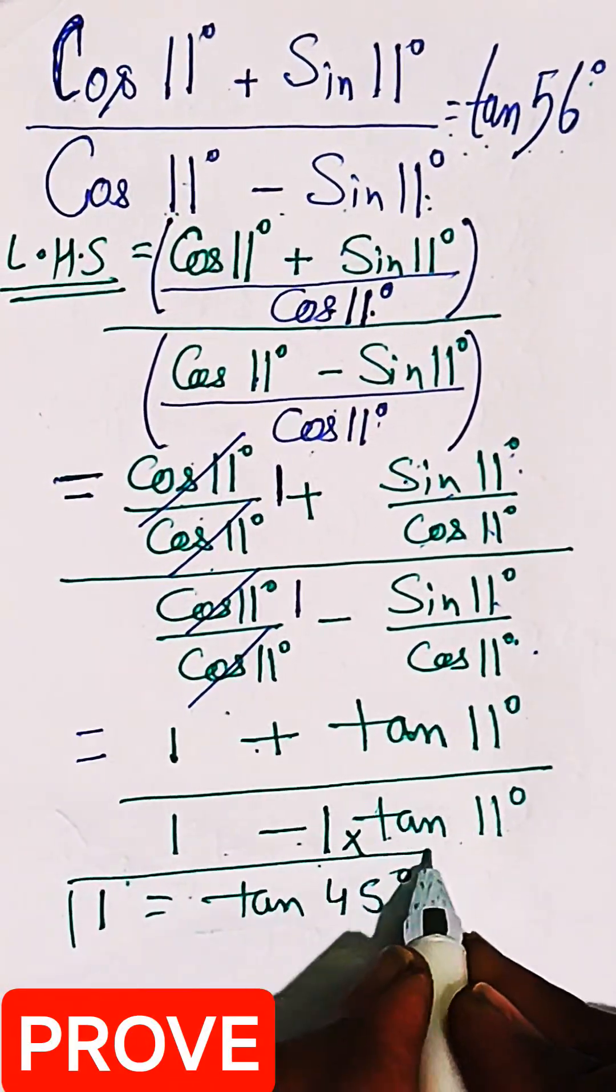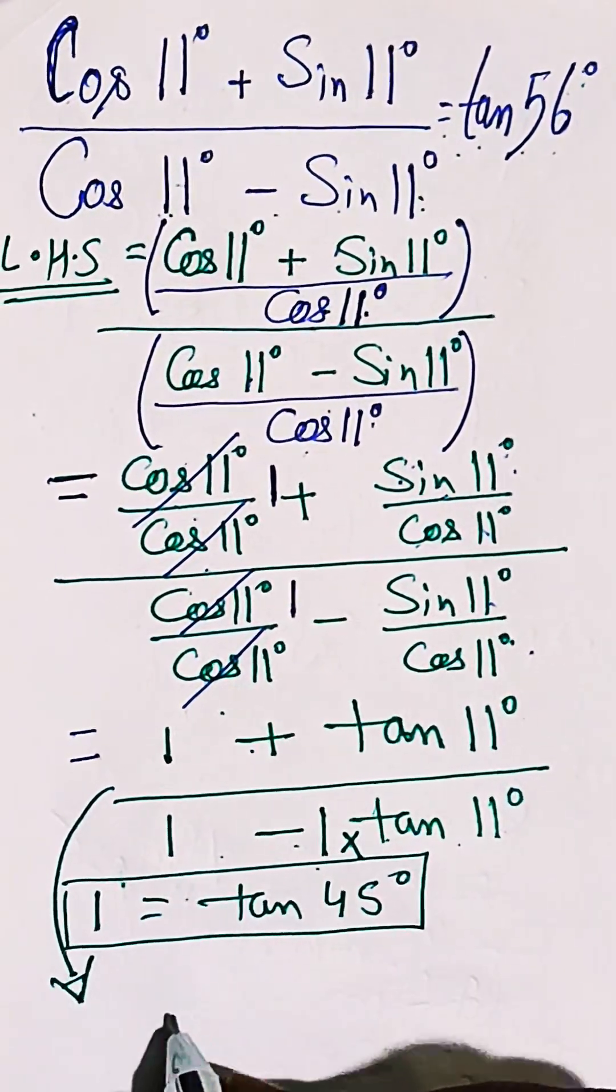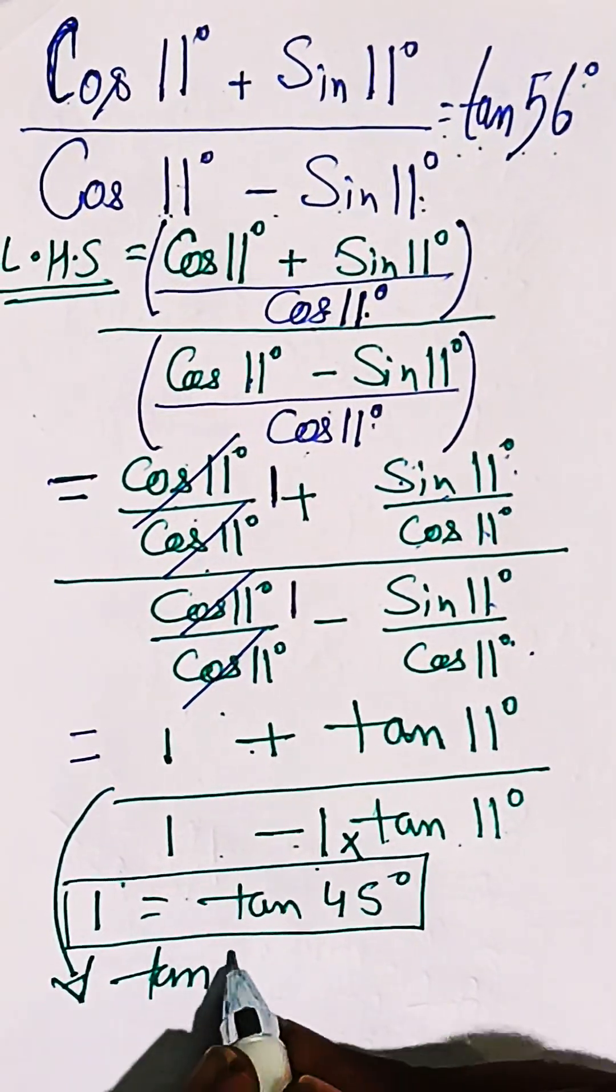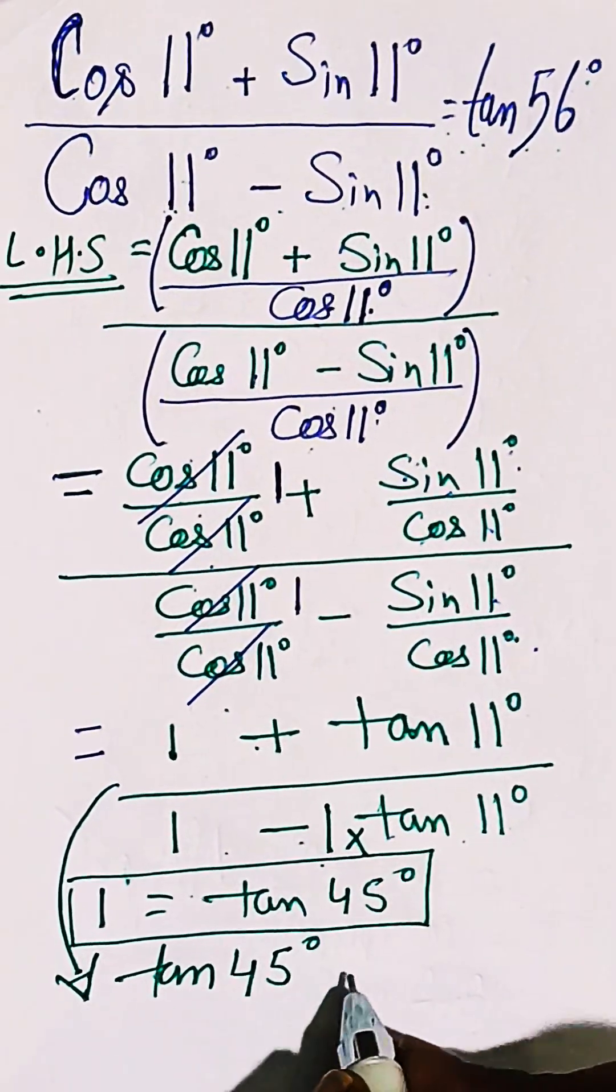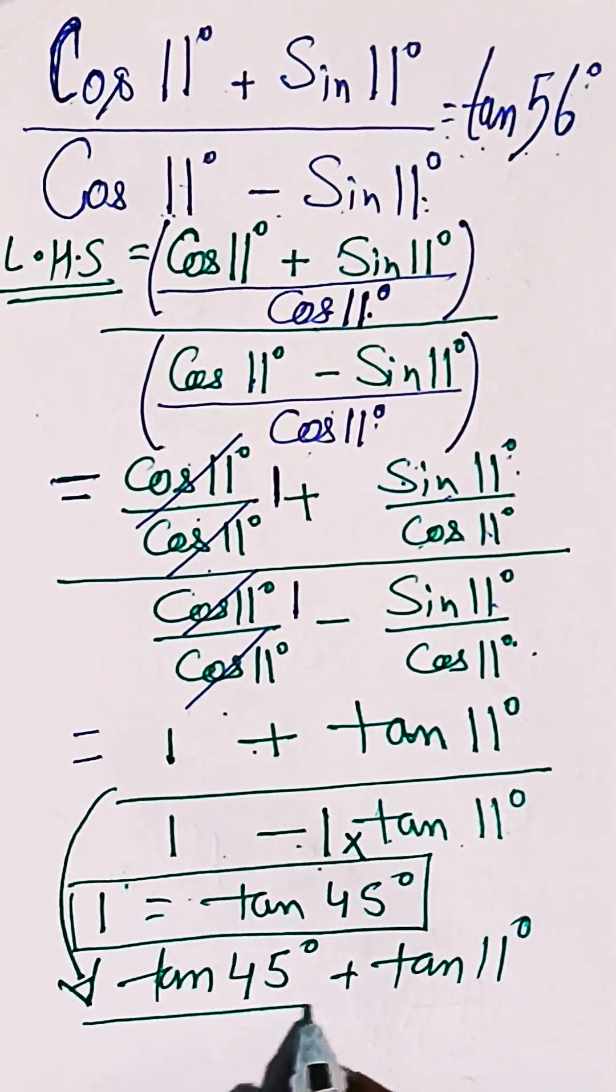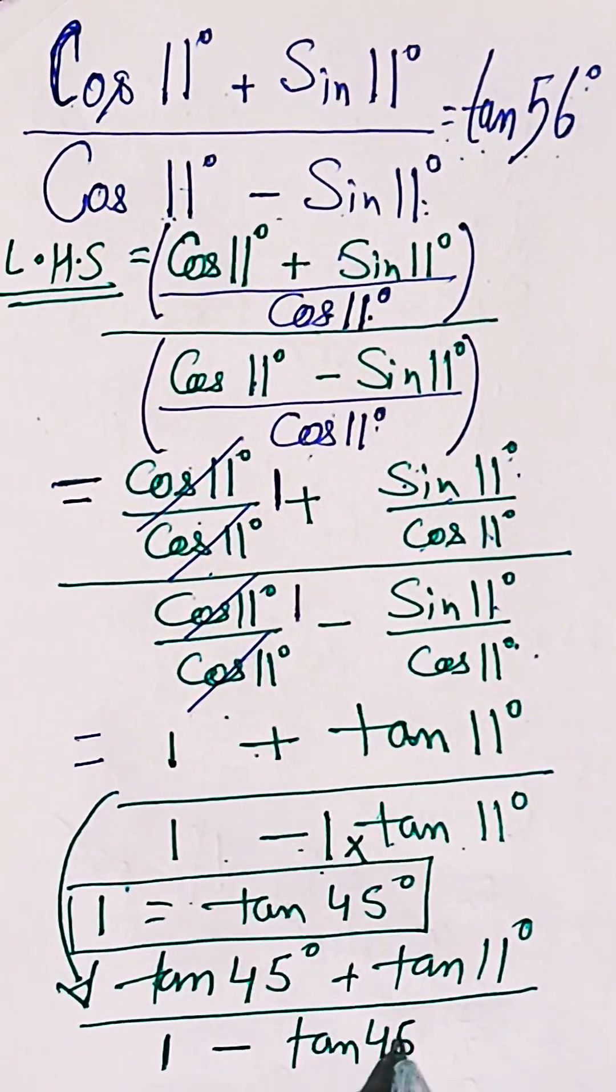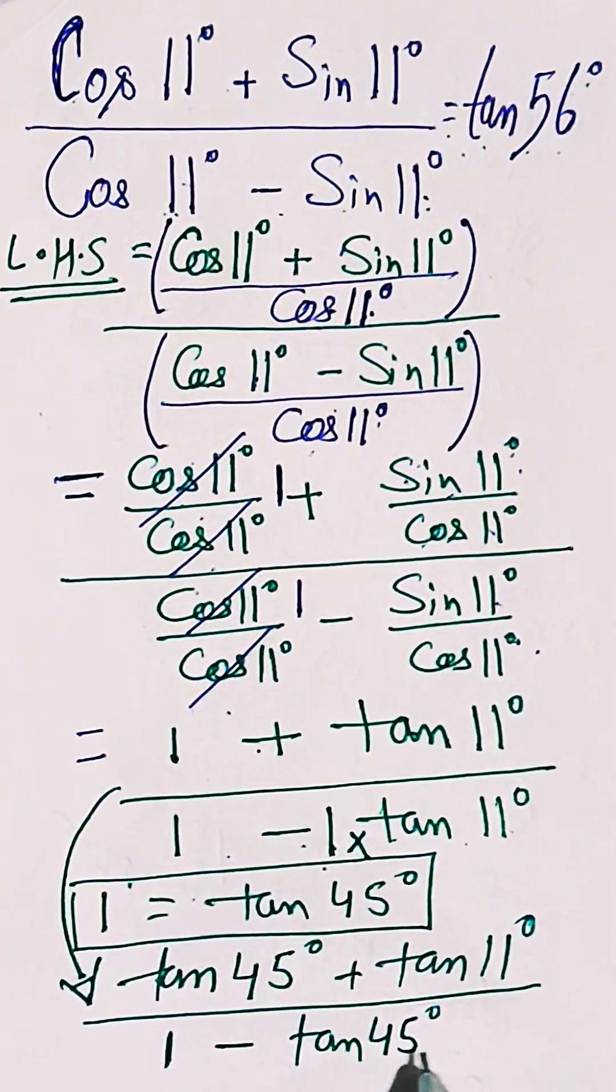So the above LHS will be simplified and can be written like tan of 45 degrees plus tan of 11 degrees divided by 1 minus tan of 45 degrees. This 1.